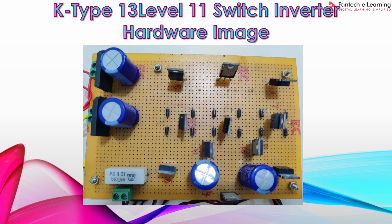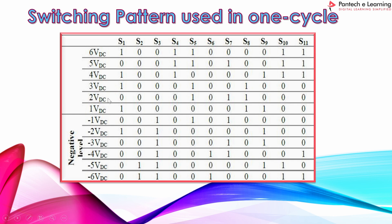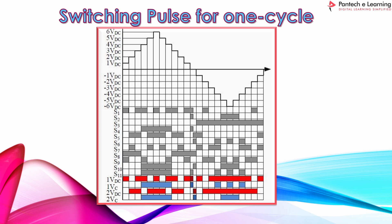Now we can see the working principle of the hardware. This is the switching pattern used in one cycle. The switches are labeled S1 through S11 in the pattern, corresponding to Q1 through Q11 in the circuit diagram. This is the switching pulse for one complete cycle. We can measure 13 levels here — levels 1 through 13 — completing one full cycle.